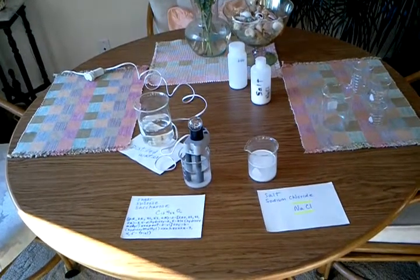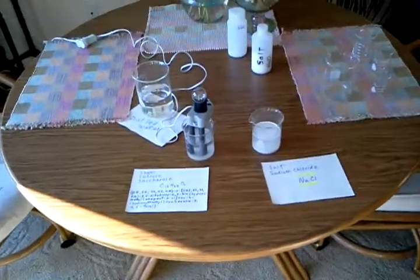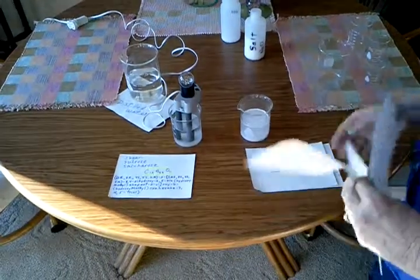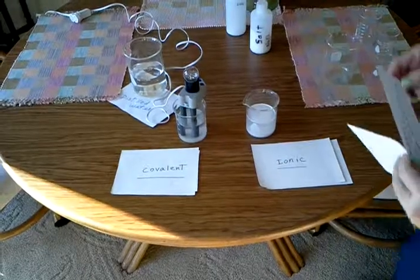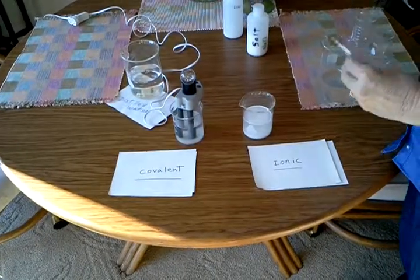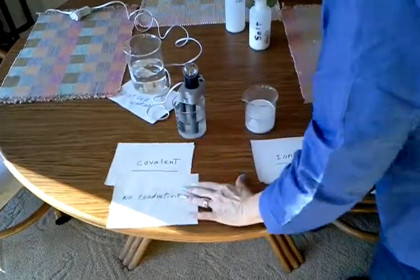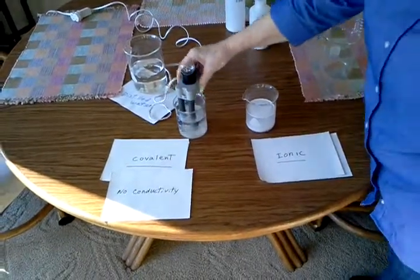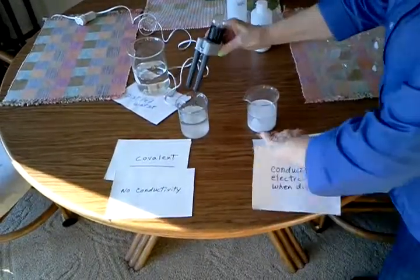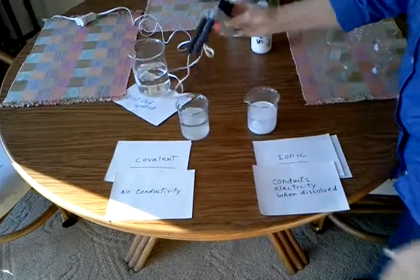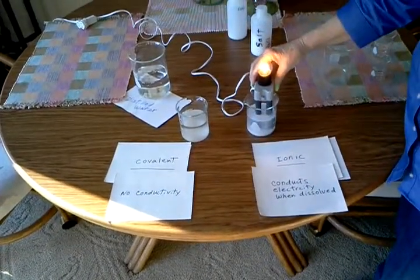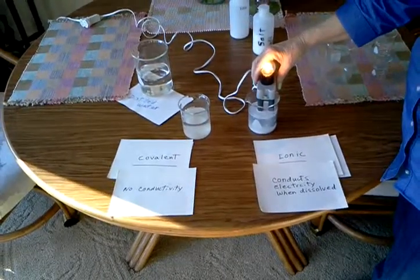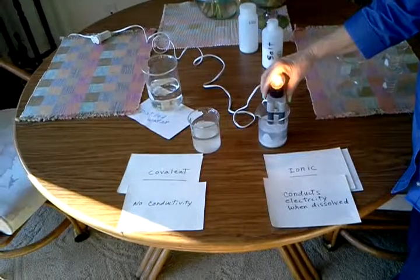So to summarize: this is an ionic bond, and this is a covalently bonded material. Covalent — there was no conductivity when it was solid or dissolved. Ionic — when it was solid, there was no conductivity, but check it out when you dissolve it. So let's talk more about that.